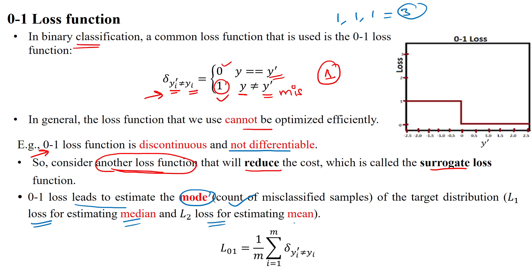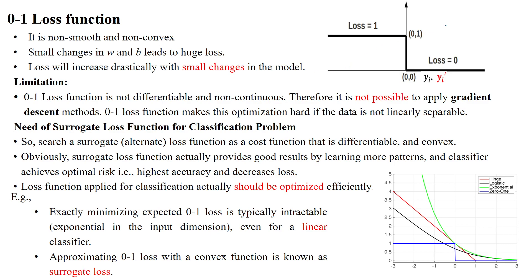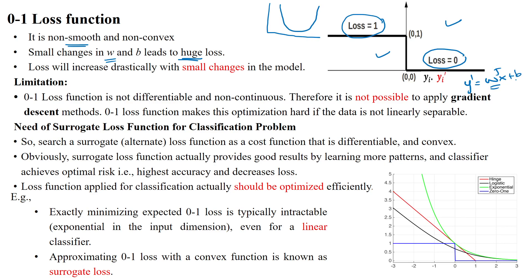With L1, we calculate the total number of misclassifications and take the average. As shown in the graph, whenever we get correct classification the loss is 0; whenever we get misclassification the loss is 1. This function is non-convex and non-smooth — small changes in parameters lead to a huge change in loss. When y' = w^T x + b, changing w and b impacts the predicted output and the loss increases drastically.